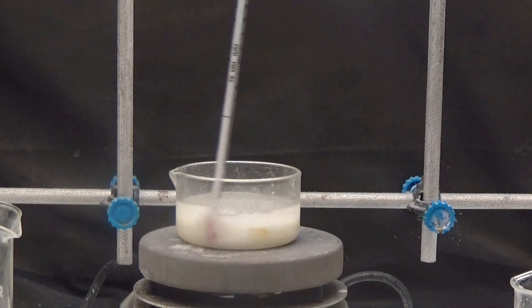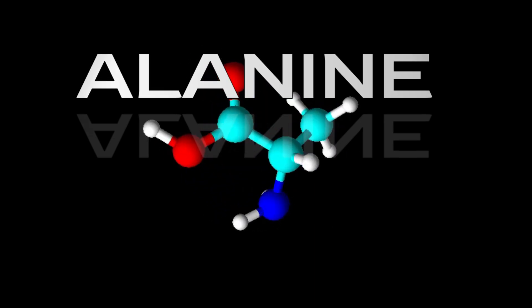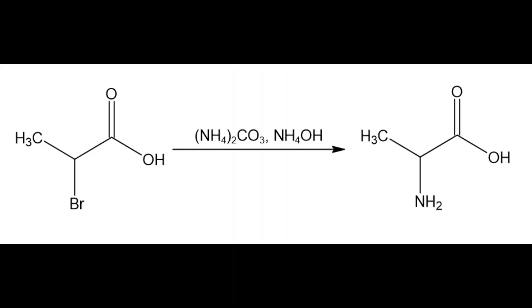In this video we are going to see how to prepare alanine. Alanine is a non-essential amino acid for humans and is part of the proteins of living beings. In this operation we are going to obtain alanine by reacting ammonia with 2-bromopropanoic acid.